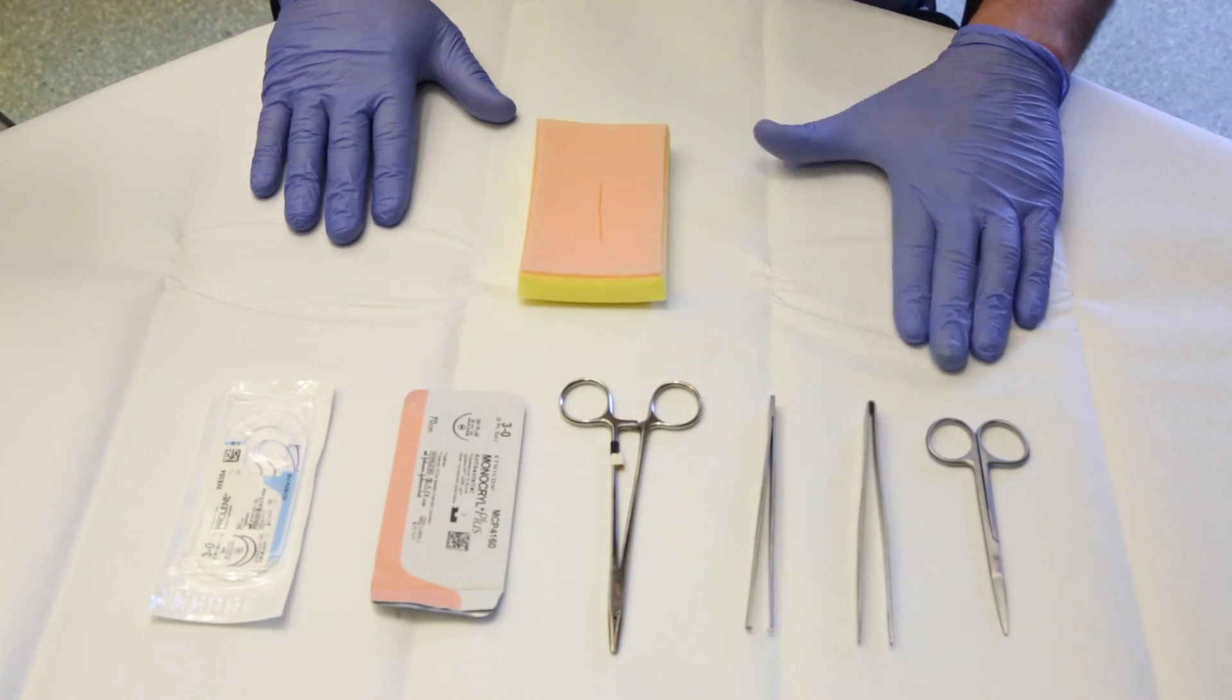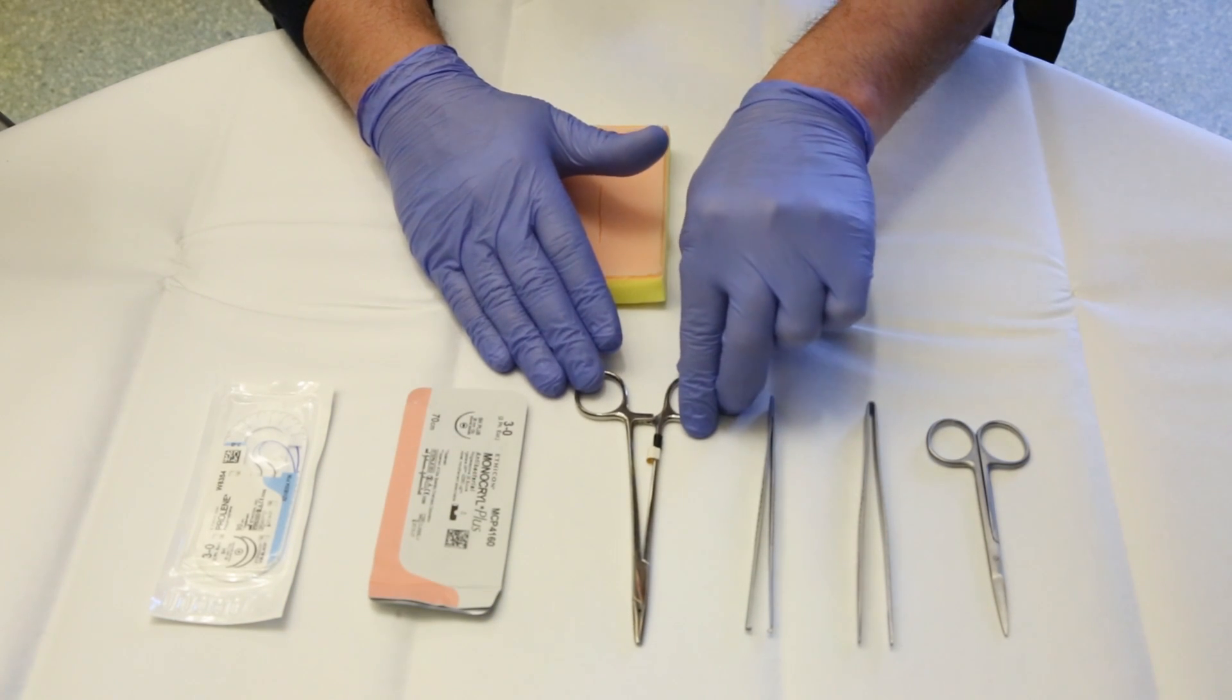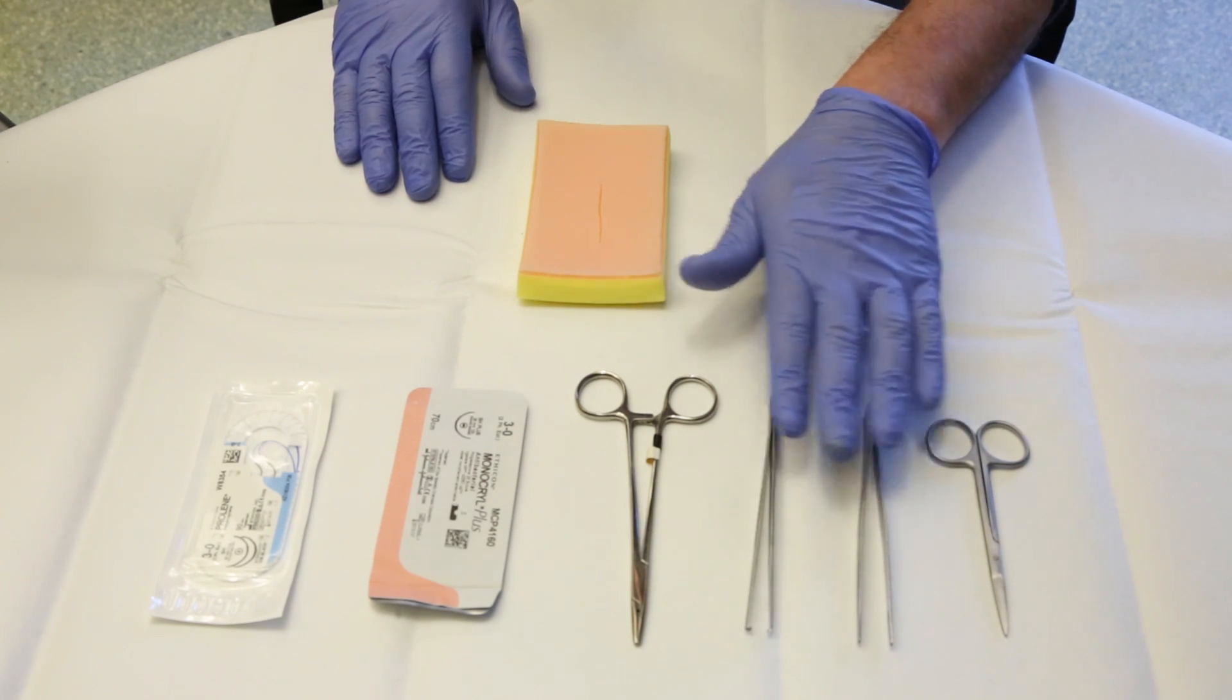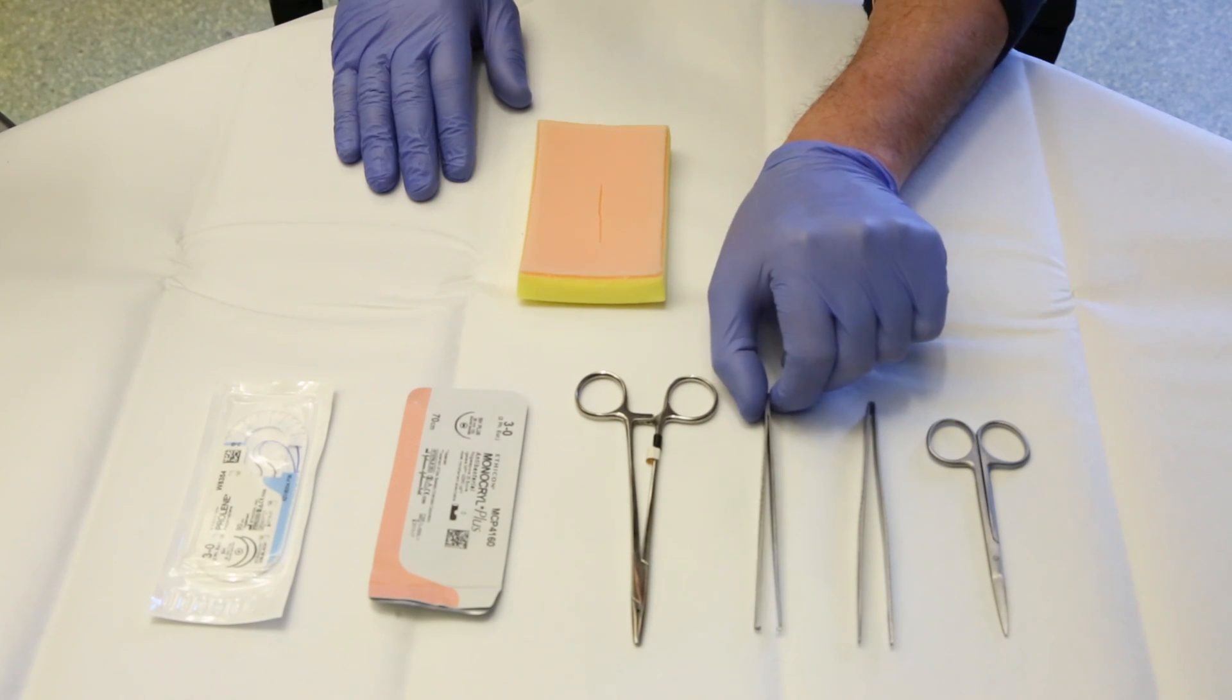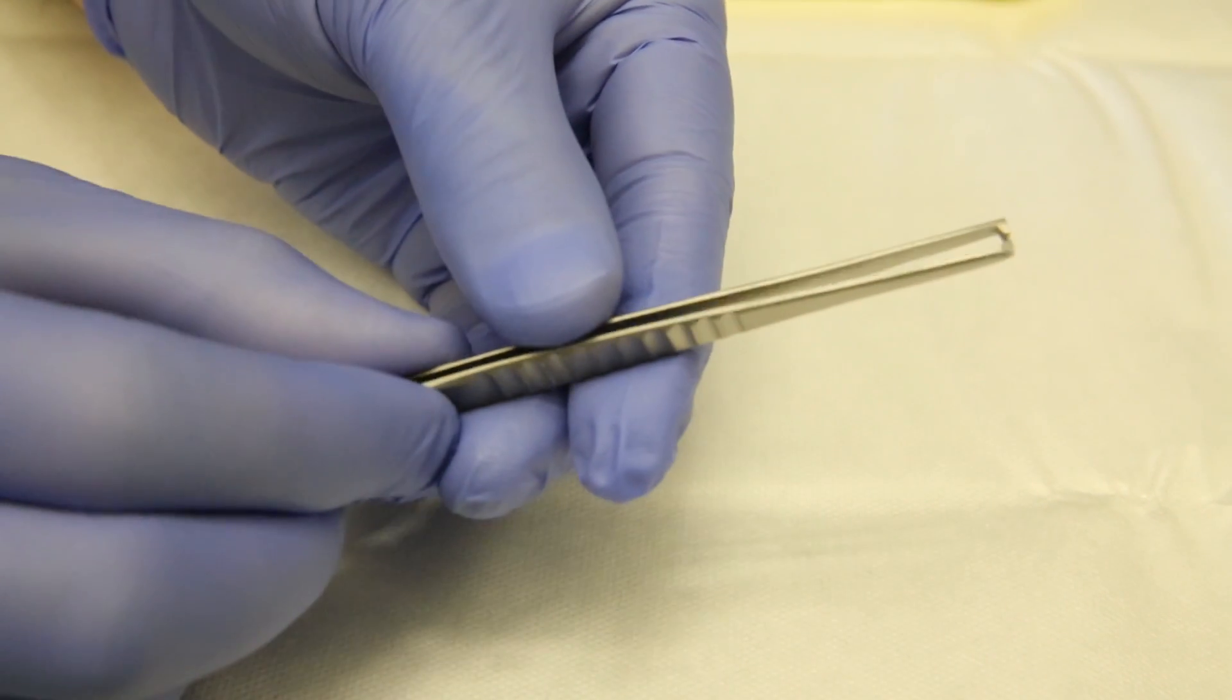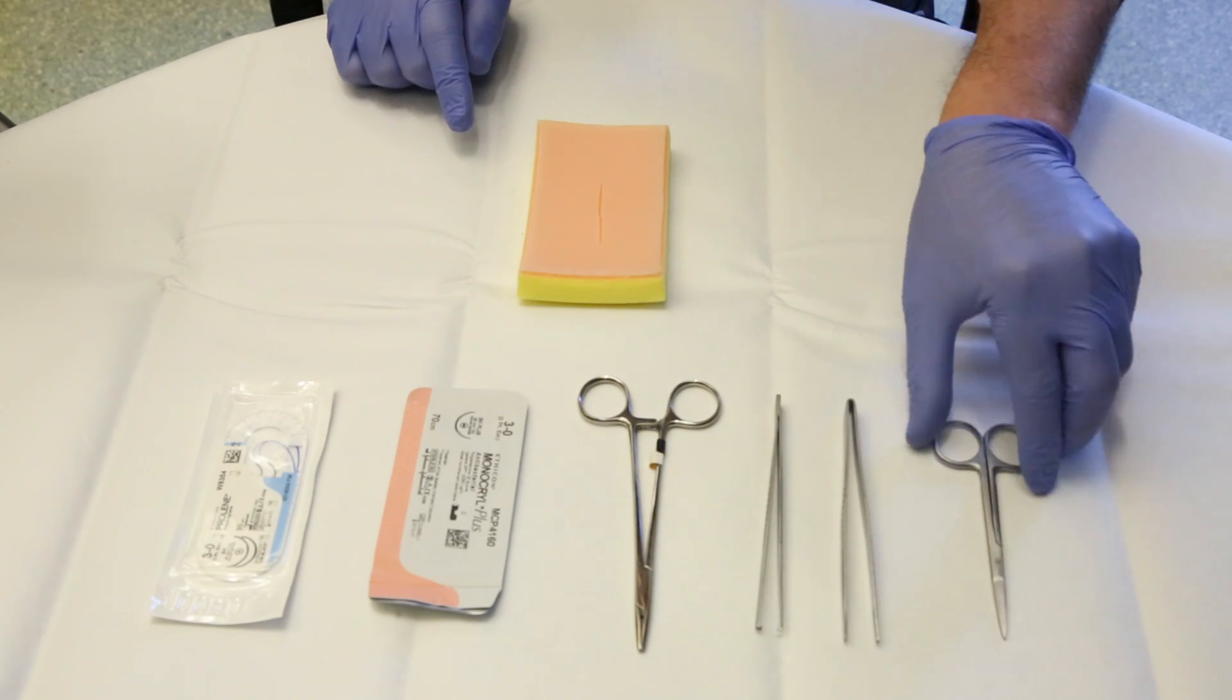So a needle holder or a needle director, forceps. These are tissue forceps to help in stitching but also can give assistance to the direction of the needle. It can be toothed forceps as you see here or smooth forceps. And the last is scissors.